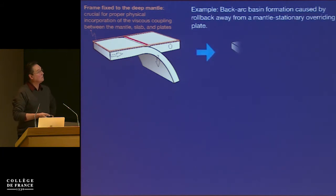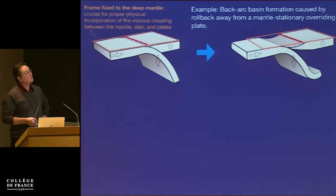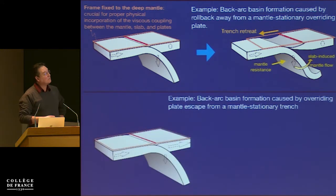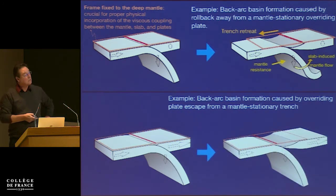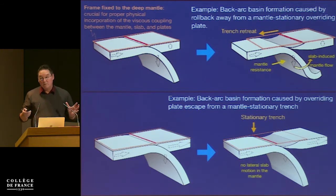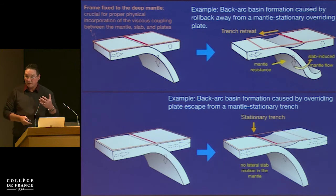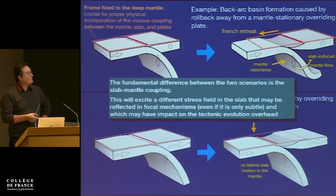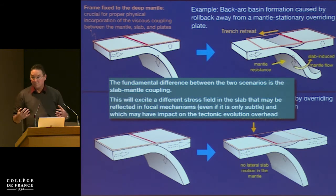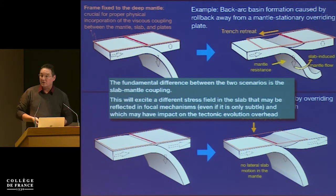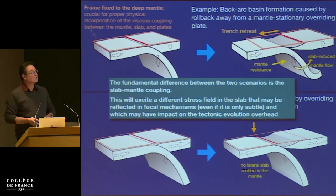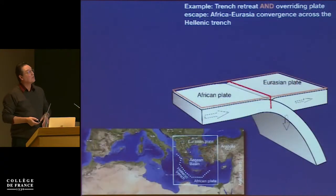You can also take the slab and trench to be stationary and let the upper plate escape. In that case, you have a stationary trench and no lateral slab motion in the mantle. Cartoon-wise they're the same, but there's a very important difference in the forcing. The fundamental difference is the slab-mantle coupling, which is quite different between these two cases. Slab-mantle coupling will induce stresses in the slab and can transmit stresses to the surface, affecting the overlying tectonic evolution.